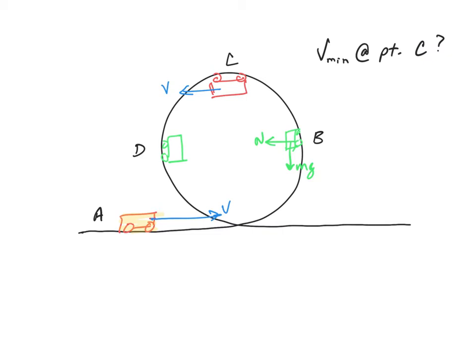mg is actually slowing it down because at this point its velocity is in this direction, so the earth's force is slowing it down while the normal force keeps it going in a circle. Just the opposite over here at point D.